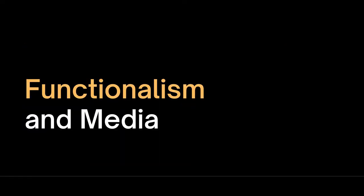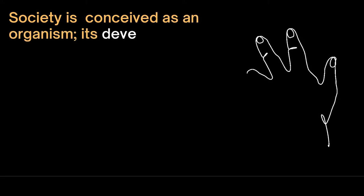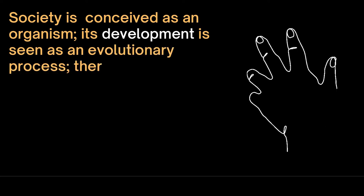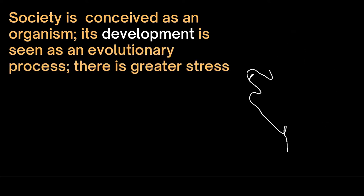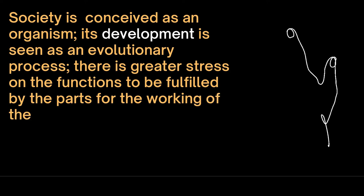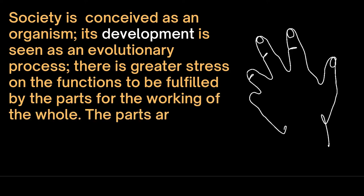Functionalism has its roots in 19th century social thought. It originated from the application of methods from biology to society. Society is conceived as an organism, and its development is seen as an evolutionary process. There is greater stress on the functions to be fulfilled by the parts for the working of the whole — the parts being families, enterprises, governmental bodies, churches, etc.